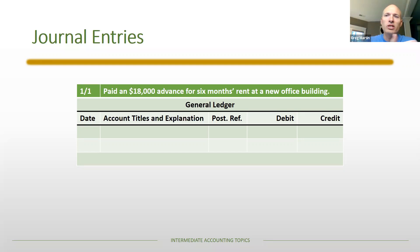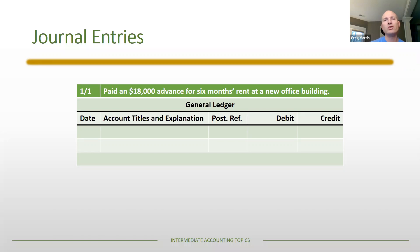This system is the foundation of how we communicate the economics of a company. When you see a journal entry like paying eighteen thousand dollars in advance for six months rent at a new office building, think about what's economically going on — what accounts show up and why. It's more than memorization; it's understanding what's happening. So let's figure out the debits and credits.